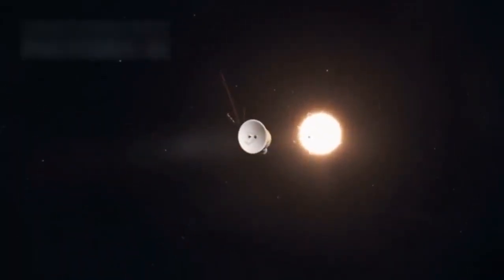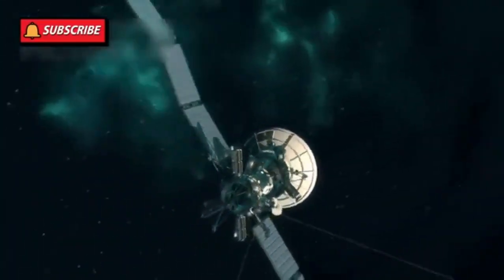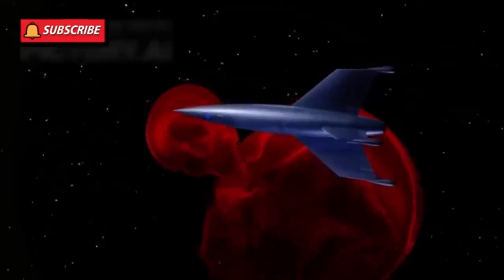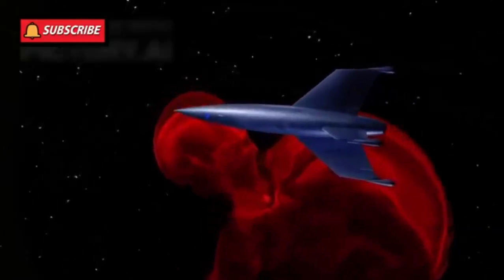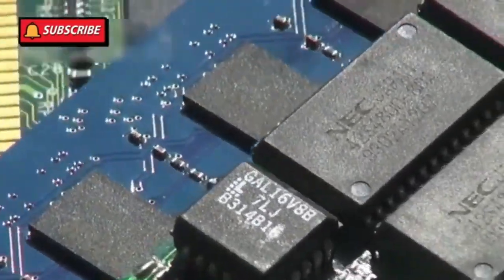Its power comes from radioisotope thermoelectric generators (RTGs), which convert the heat of decaying plutonium into electricity. Although these RTGs produce less energy each year, they have kept Voyager operational for 47 years.